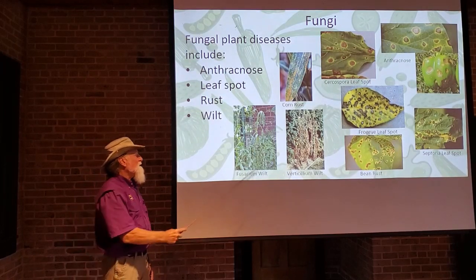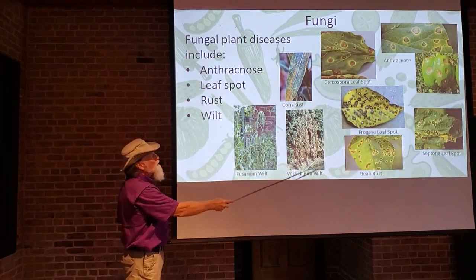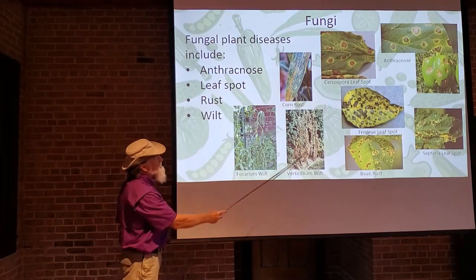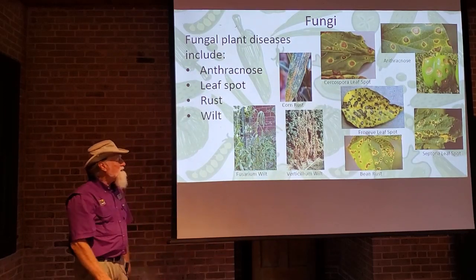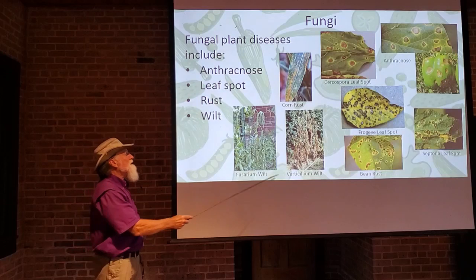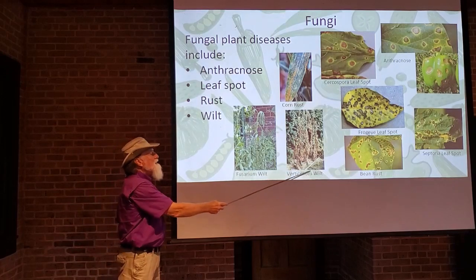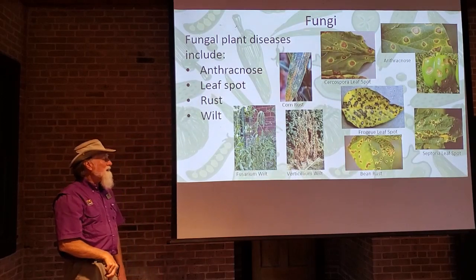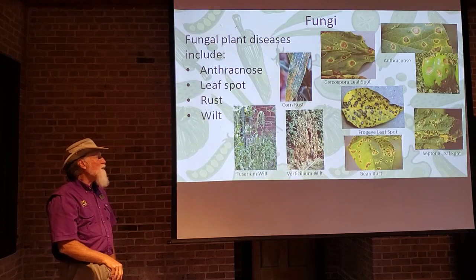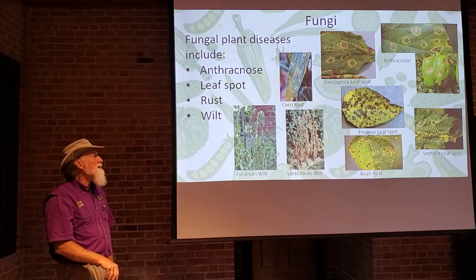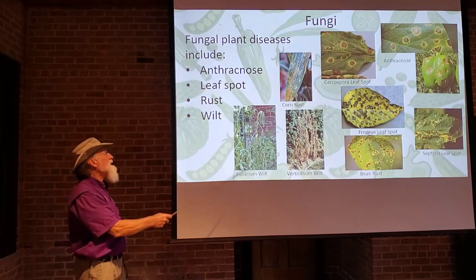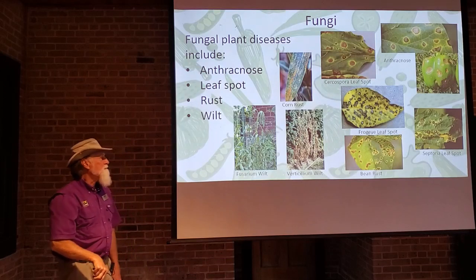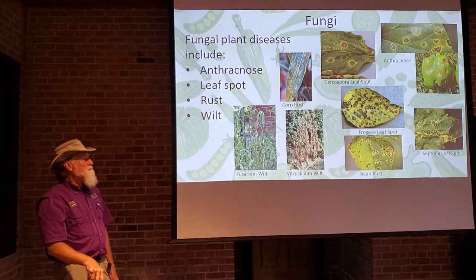Wilts: Fusarium wilt and Verticillium wilt look pretty similar. What's happening is the roots are being infected by the fungus, killing them and stopping the transfer of water up to the plant. The plant will eventually die because it can no longer get water — these are root diseases showing symptoms on the top of the plant.